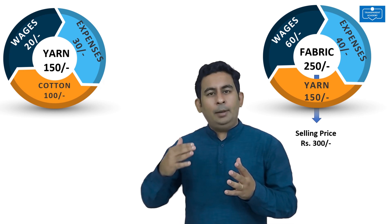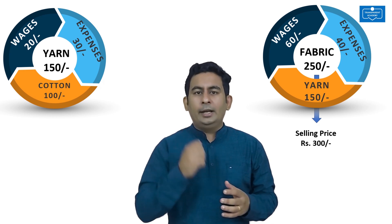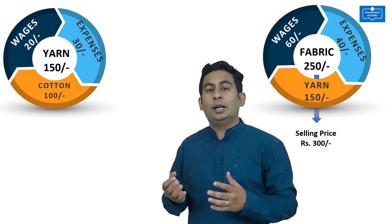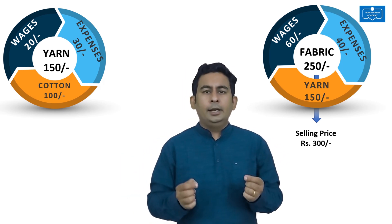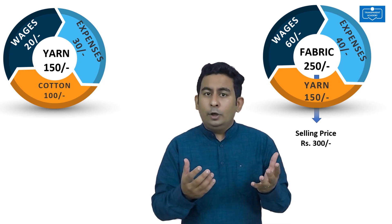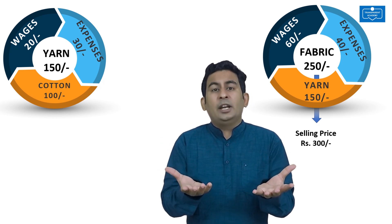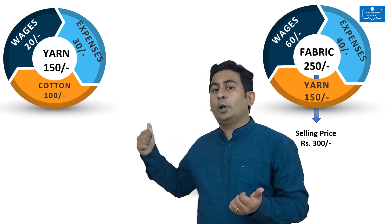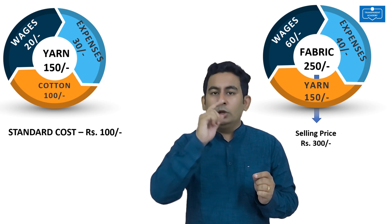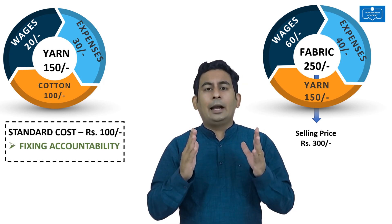Let me use the same example to explain the advantages of process costing. Advantage number 1: we know the cost of manufacturing 1 unit of yarn is 150 rupees. The management will also know what is the standard cost of manufacturing 1 unit of yarn. They will compare the actual cost with the standard cost to measure the efficiency of the process manager, and if there is a cost overrun, they will hold the process manager accountable. So the first advantage of process costing is fixing accountability.